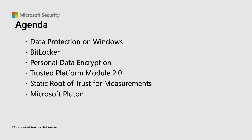We'll start by understanding what BitLocker is, its security promise, and the trade-offs in security with or without the presence of a hardware component like TPM. Then we'll continue on to personal data encryption, get an overview of the protection it provides, how it compares to BitLocker, and the different scenarios in which both protect data. We'll take a deeper dive into how these features use the TPM, and dive into what a TPM is, all while understanding how the security promise of BitLocker and PDE are kept, which leads us to the static root of trust for measurements. And finally, we'll talk about Microsoft Pluton chips, designed by Microsoft in collaboration with our silicon partners, and how it is helping with all aspects of the Secure Future Initiative.